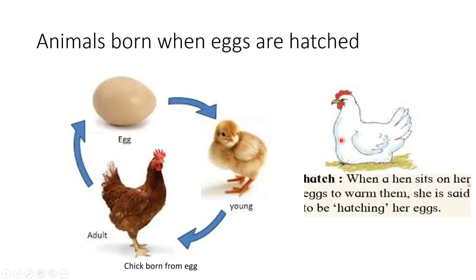Animals are also born when eggs are hatched. When a hen sits on her eggs to warm them, she is said to be hatching her eggs. A hen sits for 21 days to warm the eggs. After 21 days, a chick comes out from the egg. As the chick grows into an adult, it looks the same as the adult.